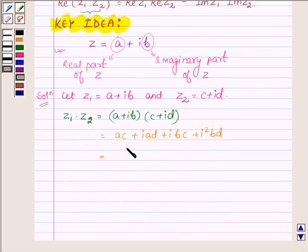This is further equal to AC minus BD, since i squared equals minus 1. Taking i common from the remaining terms,